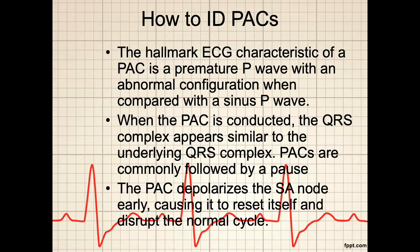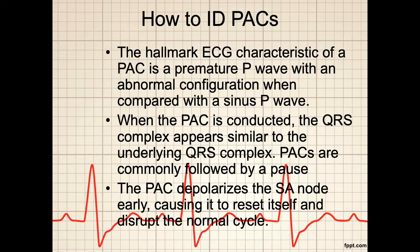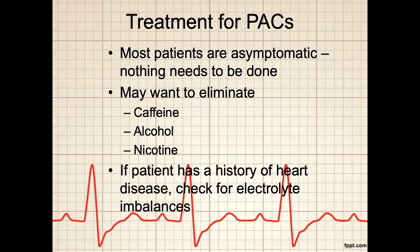The PR interval can be normal, shortened, or slightly prolonged, depending on the origin of the ectopic focus. If no QRS complex follows the premature P-wave, a non-conducted PAC has occurred. PACs may occur in bigeminy, that is every other beat is a PAC, trigeminy, every third beat is a PAC, or couplets, that is two PACs in a row. The patient may have an irregular peripheral or apical pulse rhythm when the PACs occur. They may complain of palpitations, skipped beats, or a fluttering sensation.